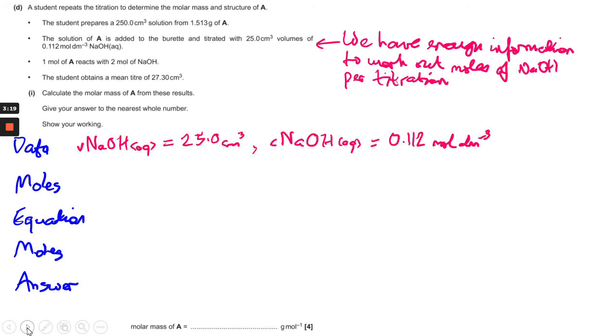So the volume is 25 centimeters cubed and the concentration is 0.112 moles per decimeter cubed. So using n equals c times v you can work that out, making sure that you convert 25 centimeters cubed into decimeters cubed by dividing by a thousand, and that gives you 2.8 times 10 to the minus 3 moles.